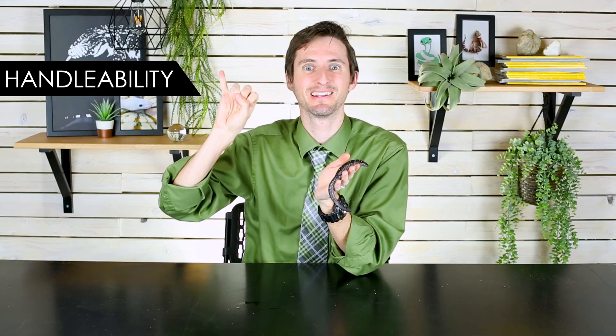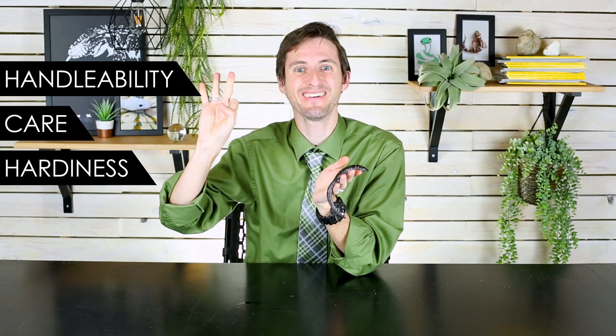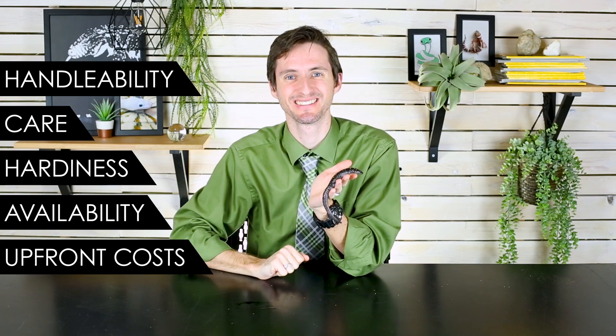Are they the right pet for you? To help you figure that out, we're going to break this down into our five categories: handleability, care, hardiness, availability, and upfront costs. Overall, we give the spotted salamander a score of 3.8 out of 5.